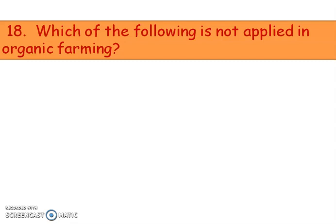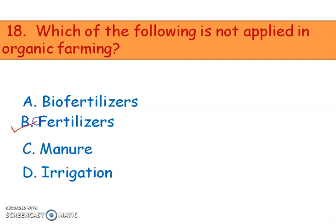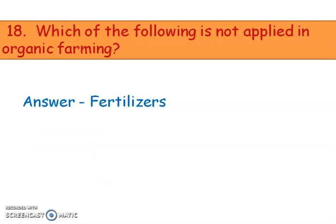Next question: which of the following is not applied in organic farming? Options are bio-fertilizers, fertilizers, manure, and irrigation. The right answer is fertilizers. In organic farming, the aim is not to use chemicals. Since fertilizers contain chemicals, they are not used in organic farming.